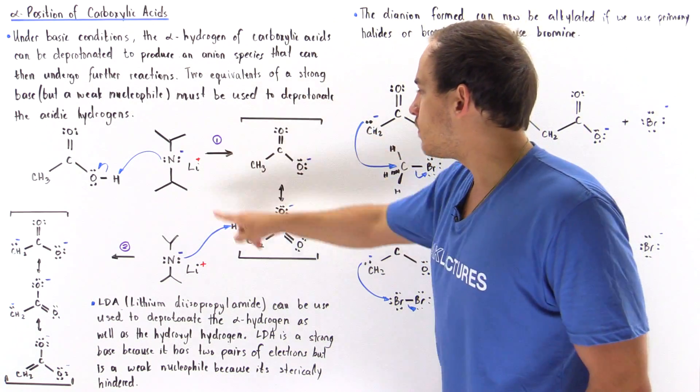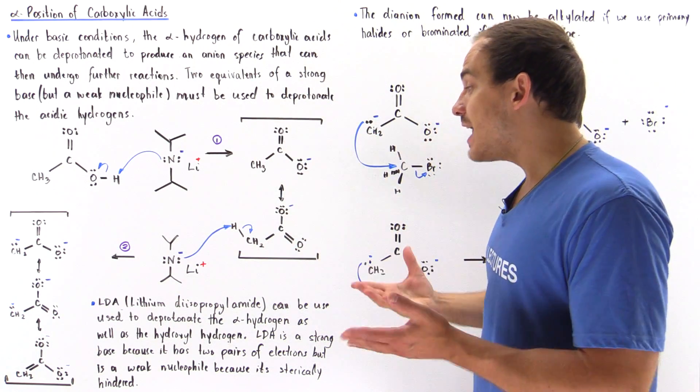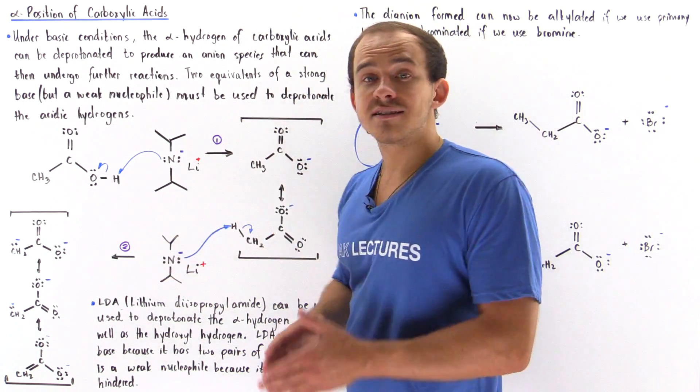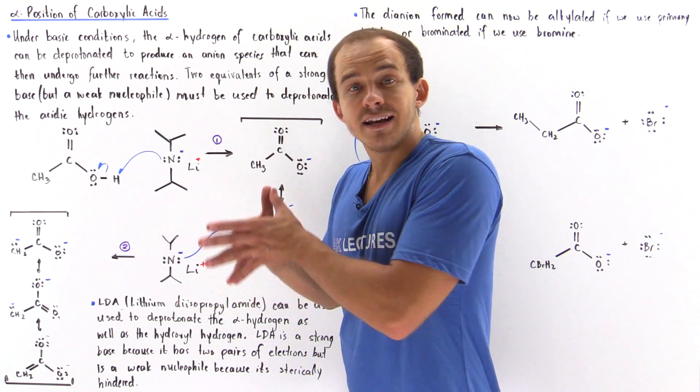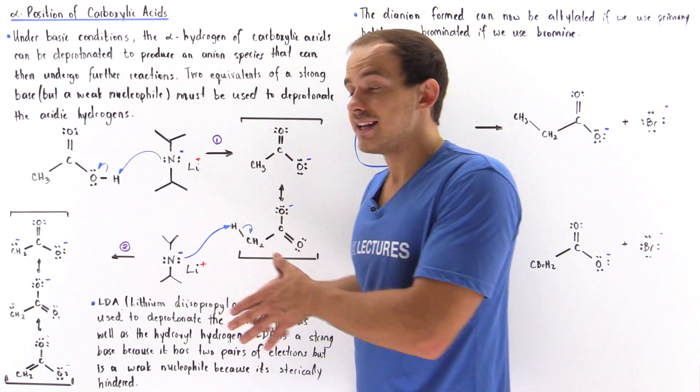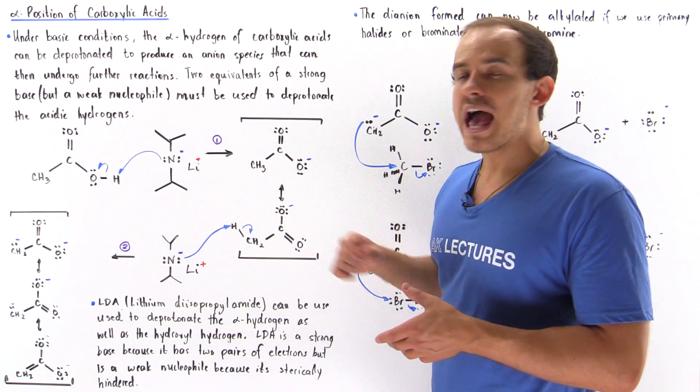to this carboxylate ion, then now this acts as a base and deprotonates the second acidic position, the second acidic hydrogen found on the alpha position.